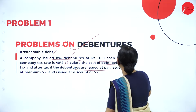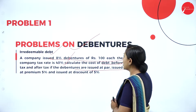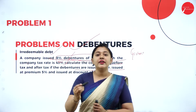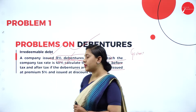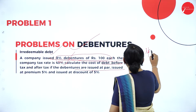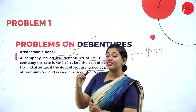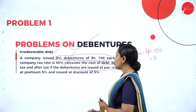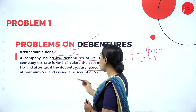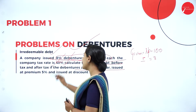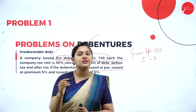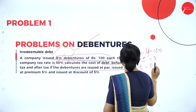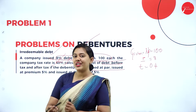Let us write down what is given in the question. 8% debentures of Rs. 100 each — for issuing the debenture, Rs. 100 is the face value, which is nothing but your net proceeds. On that Rs. 100, the debenture interest is 8%, so 100 into 8% gives interest of Rs. 8. Further, the tax rate is 40%, which converted to decimal is 0.4.